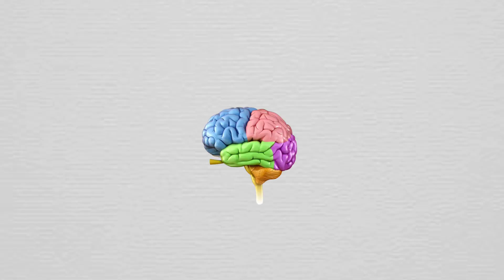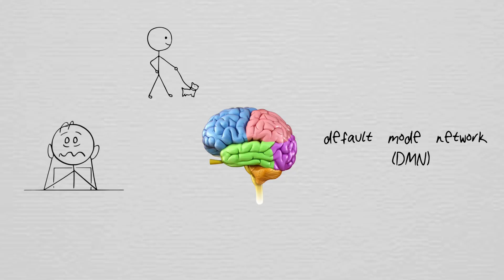Now, to understand how shrooms mess with your head, you've got to know how your brain normally works. Your thoughts, emotions, and sense of self are all managed by something called the Default Mode Network, DMN. Think of it as the brain's control center. It keeps your reality stable, filters out unnecessary noise, and makes sure you don't get overwhelmed by everything.